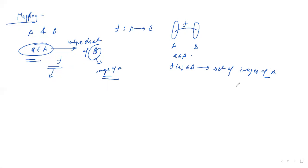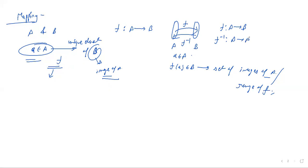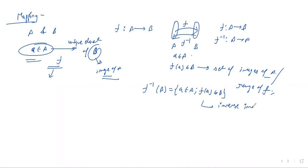F⁻¹ is the inverse mapping from B to A. If I define F⁻¹(B), it will be the set of a ∈ A where F(a) ∈ B. This is called the inverse image, or pre-image of B. That is how the mapping is defined.